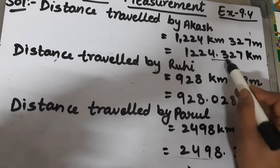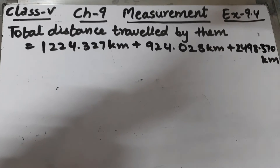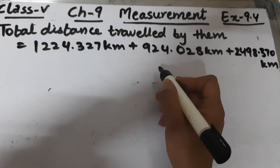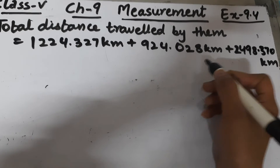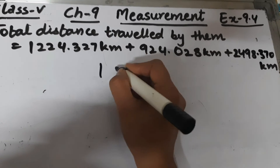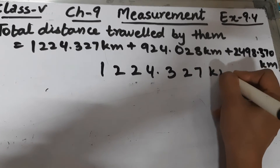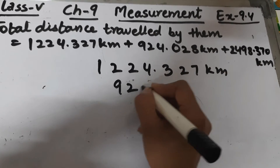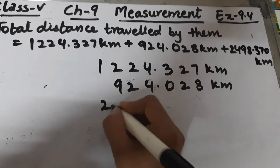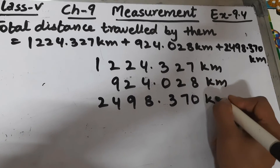Now we have to find the total distance traveled by them. For that, we will add all three values: 1224.327 kilometers plus 928.028 kilometers plus 2498.370 kilometers.